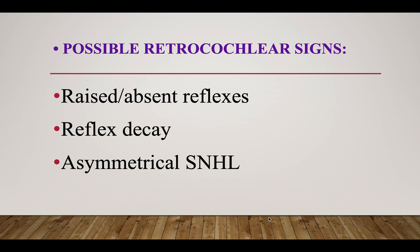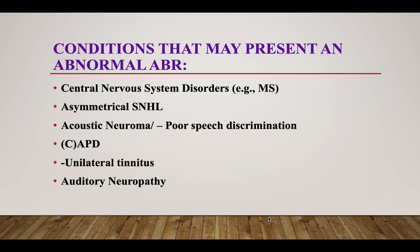What are the possible retro-cochlear signs? Raised or absent acoustic reflex, acoustic reflex decay, and unilateral or asymmetrical sensorineural hearing loss. Conditions that may present with an abnormal ABR include central nervous system disorders like multiple sclerosis, unilateral or asymmetrical sensorineural hearing loss, acoustic neuroma or vestibular schwannoma with poor speech discrimination score, central auditory processing disorder, unilateral tinnitus, and auditory neuropathy spectrum disorder.